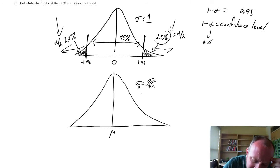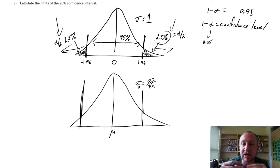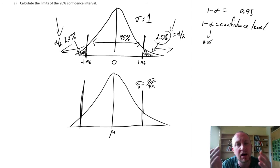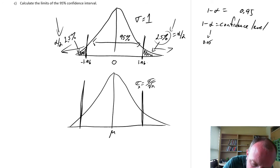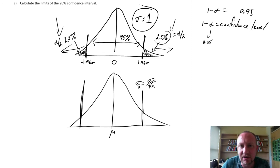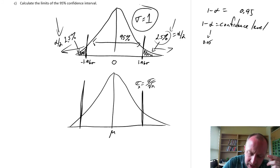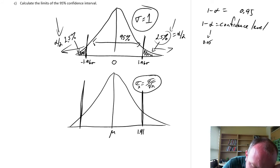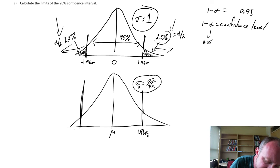Coming down now into the population distribution, I can define what those corresponding values are there. The value 1.96 represents 1.96 standard deviations — in the standard normal, standard deviations are 1, so we often drop them. Down here in the population distribution, we're looking at standard errors of the mean, so the upper limit is 1.96 sigma x-bar and the lower limit is negative 1.96 sigma x-bar.